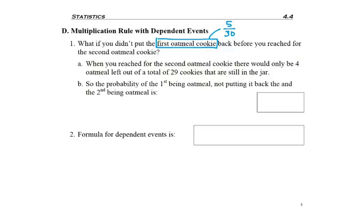The probability of the first being oatmeal not putting it back and then the second being oatmeal would be first oatmeal still five out of 30 because the jar has been untouched. But that second cookie being oatmeal we just said was now four over 29. We can still multiply the fractions.